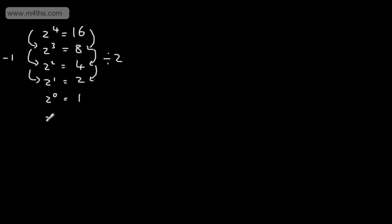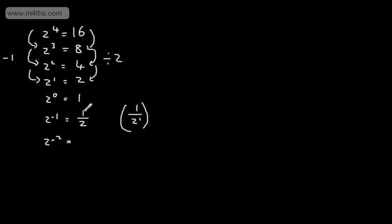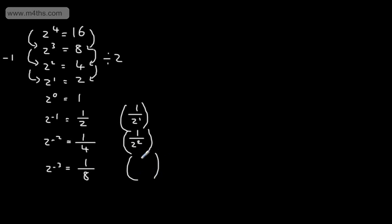Let's take this a step further and subtract another power, giving us 2 to the power of minus 1. We divided the right-hand side by 2 again, so we get 1 over 2, or 1 over 2 to the power of positive 1. Subtracting another power, dividing by 2 again, gives 1 over 4 — that is, 1 half divided by 2 — or 1 over 2 squared. And 2 to the minus 3 would give us 1 over 8, or 1 over 2 to the power of positive 3.